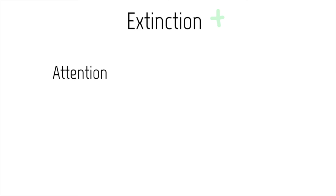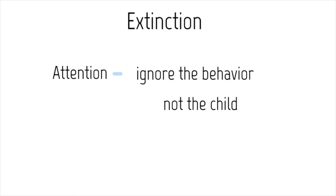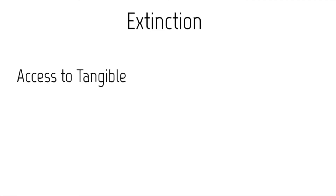When we have attention-seeking behaviors that are inappropriate — whether dangerous or problematic to the individual or others in the environment — we want to ignore the behavior. We don't ignore the child, but we ignore the behavior. Always combining reinforcement with this when they are engaging in appropriate behaviors for attention.